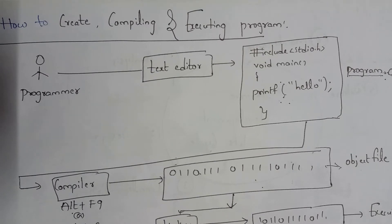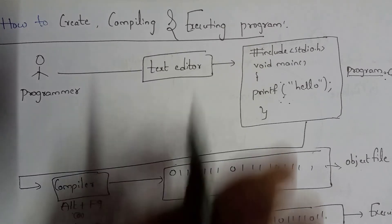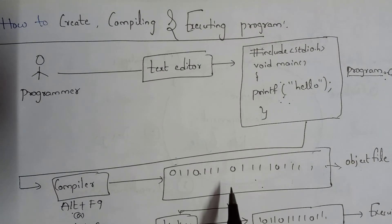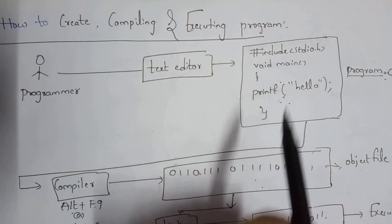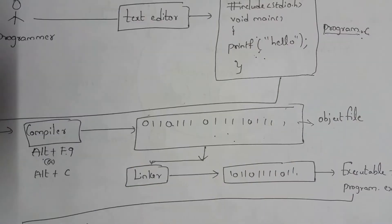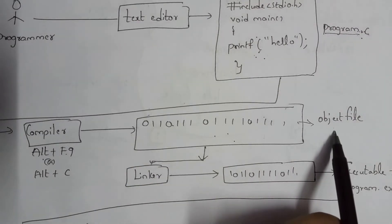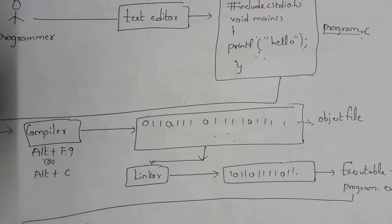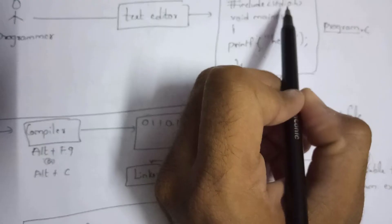After creating the program, the next step is compiling. The C program is written in high-level language, which is English-like. To convert this program into machine-understandable language, you need a compiler. Whenever you click Alt+F9, the compiler will convert the program into machine language — that is, zeros and ones. At this time, an object file is created.